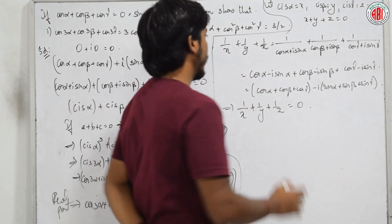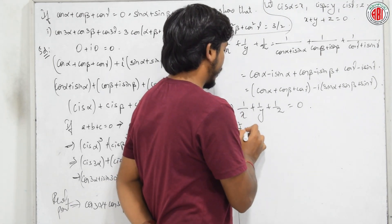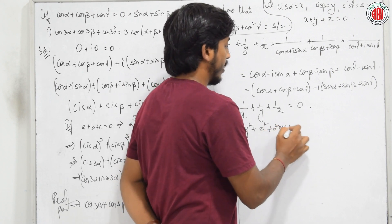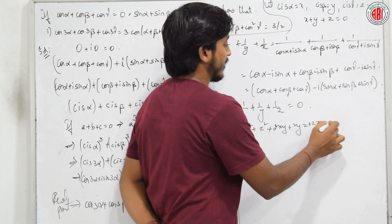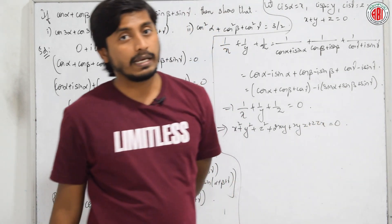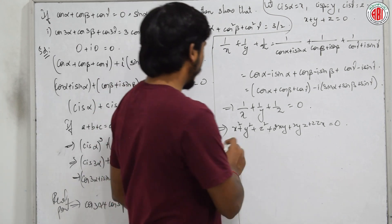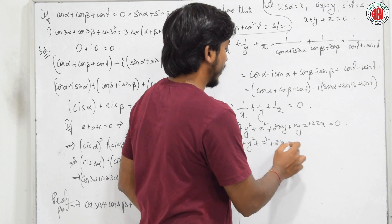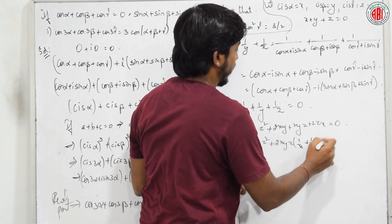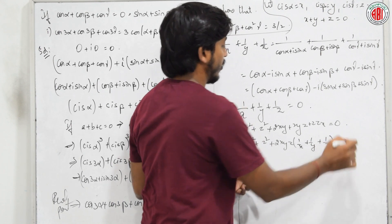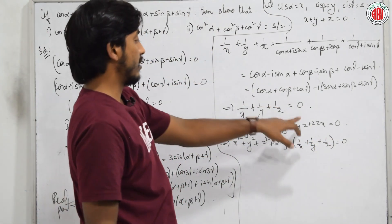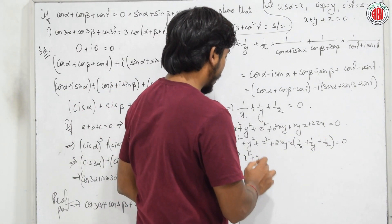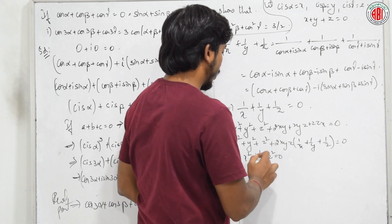Squaring x + y + z = 0: x² + y² + z² + 2xy + 2yz + 2zx = 0. Taking 2xyz common from the cross terms gives 2xyz(1/x + 1/y + 1/z) = 2xyz · 0 = 0. Therefore x² + y² + z² = 0.